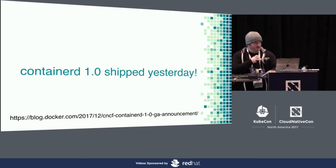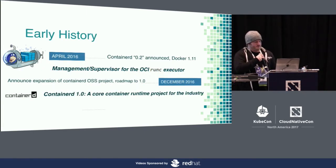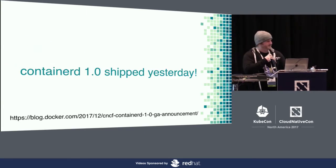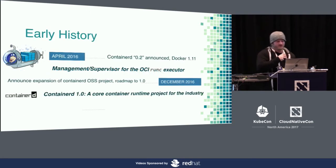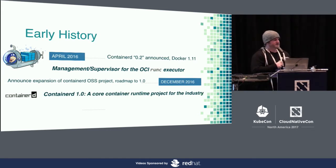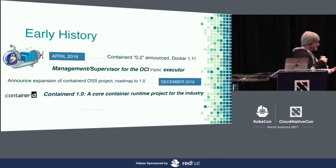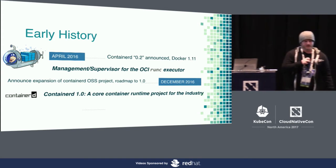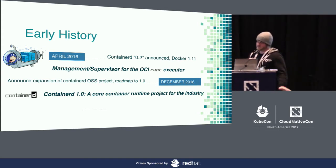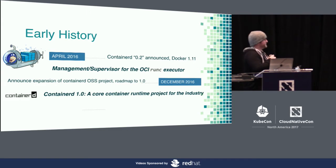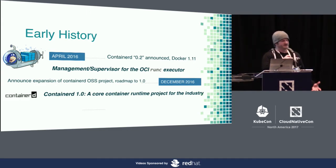The early history of ContainerD: Docker had a component called libcontainer, which was eventually spun out into a project called ContainerD. It was released in Docker 1.11, acting as a management layer or supervisor of OCI RunC executors. Over time, based on community requests and architectural reasoning, we decided to expand ContainerD's scope as a core container runtime — essentially Docker with minimal features but full capability of the entire operating system.